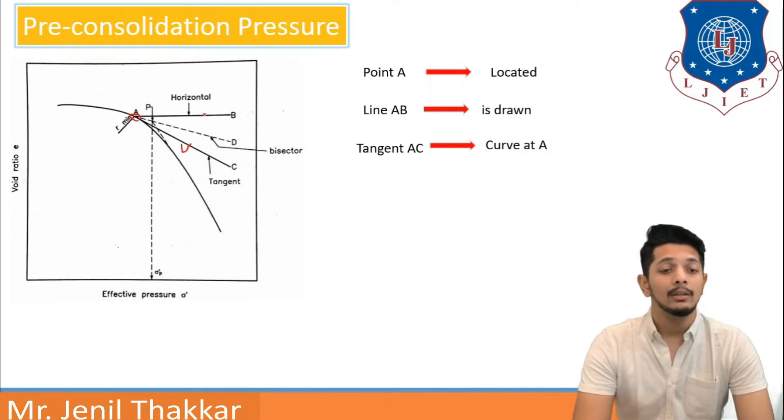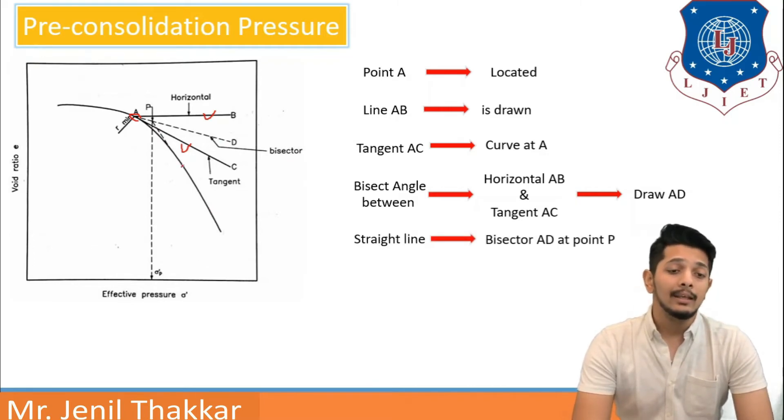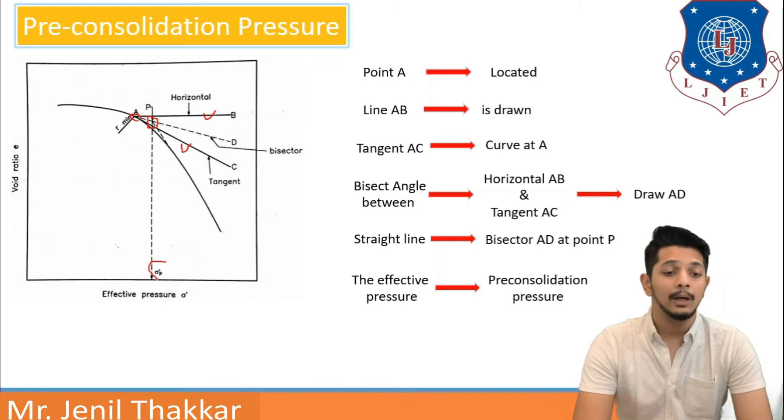Here AC is drawn. AB is drawn before. Then I will bisect line AB and line AC. The horizontal line and tangent will be bisected by line AD. The bisector will be given name AD. Then this curve will be extended to a straight line to meet the bisector AD at point P. I will obtain the point P and the effective pressure sigma dash at point P, that is sigma P dash. That is our pre-consolidation pressure. This is the method to determine pre-consolidation pressure, an empirical method.